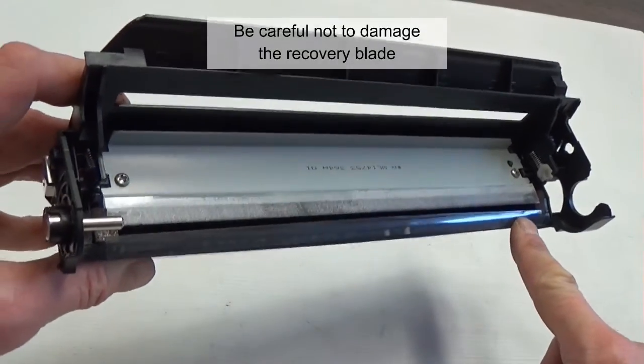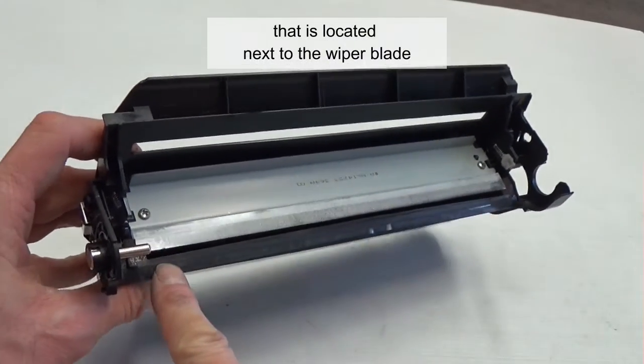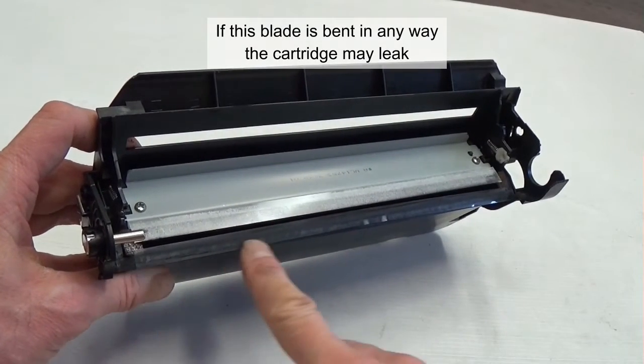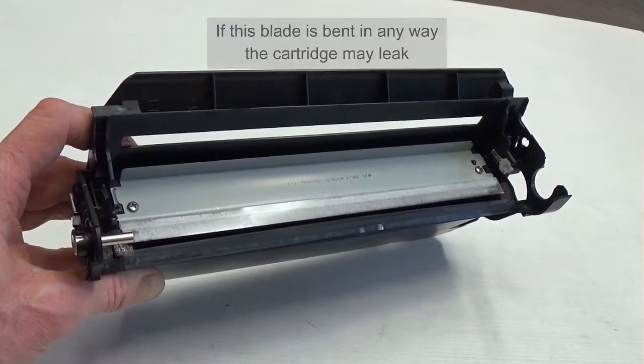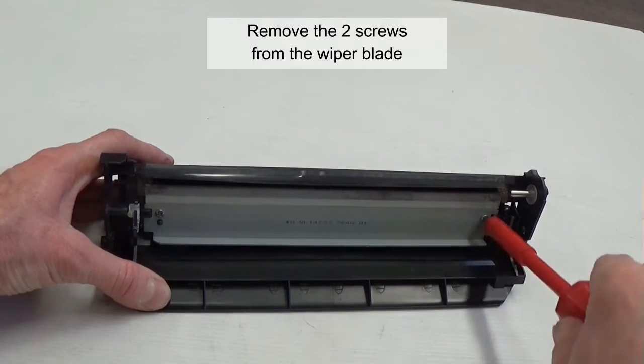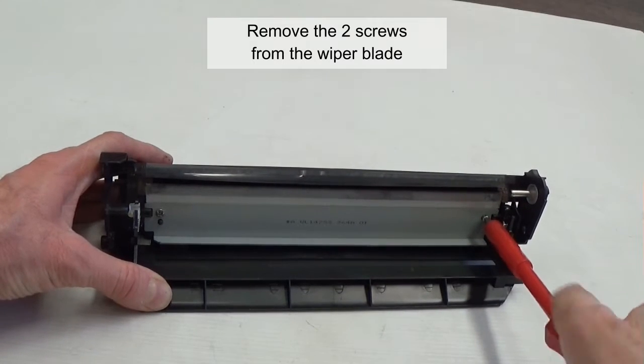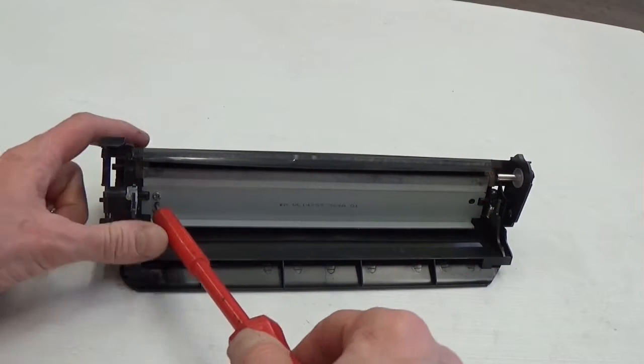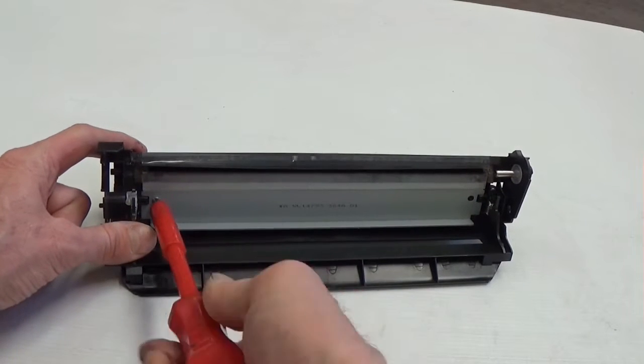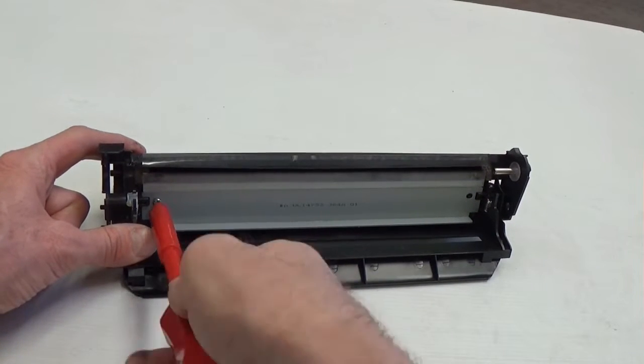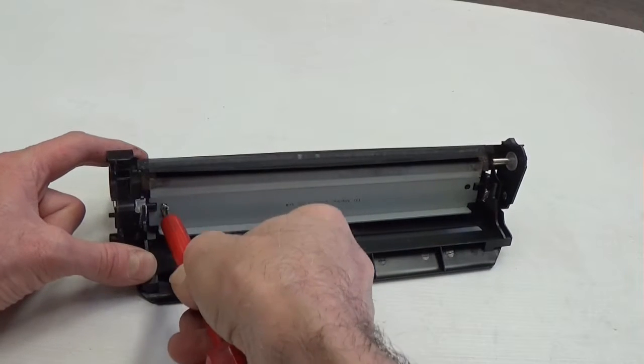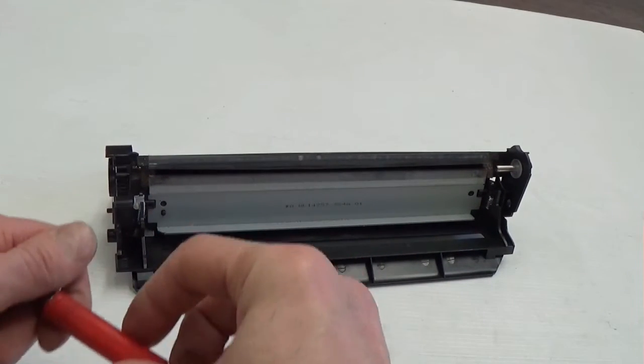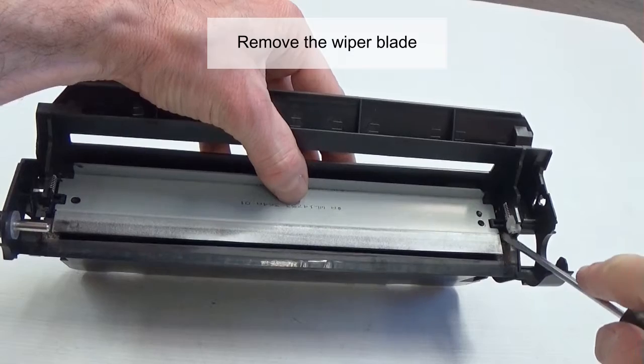Be careful not to damage the recovery blade that is located next to the wiper blade. If this blade is bent in any way, the cartridge may leak. Remove the two screws from the wiper blade. Remove the wiper blade.